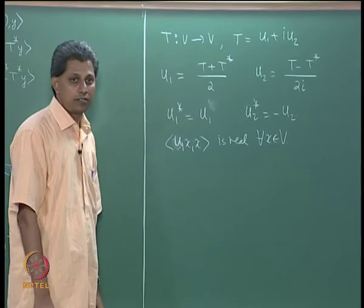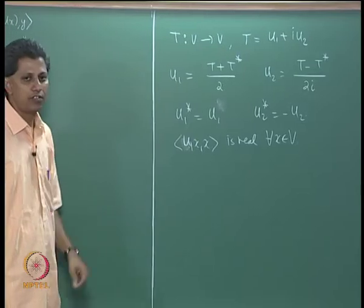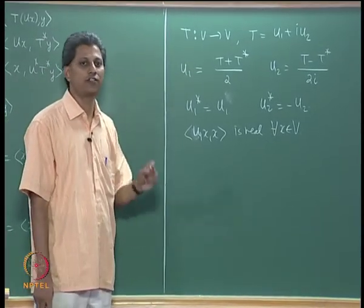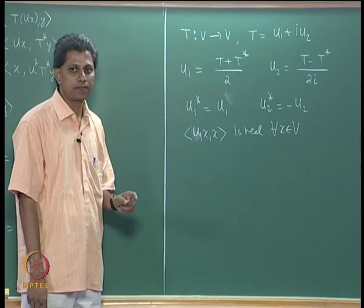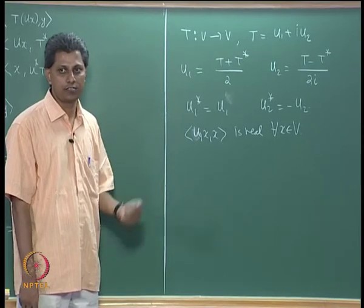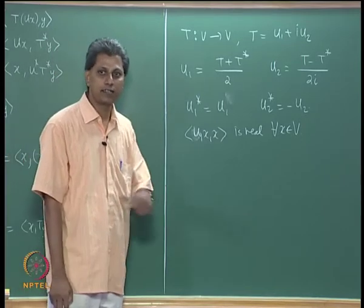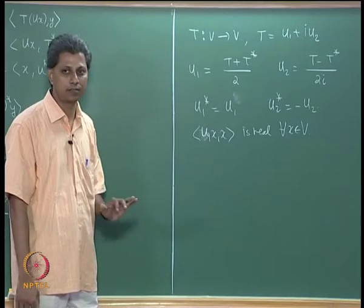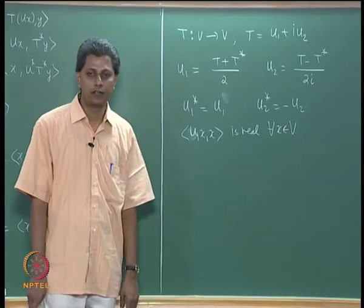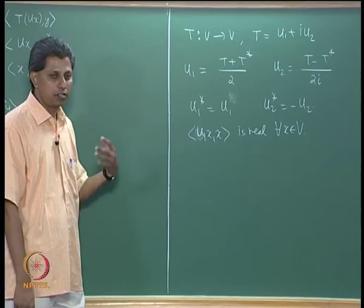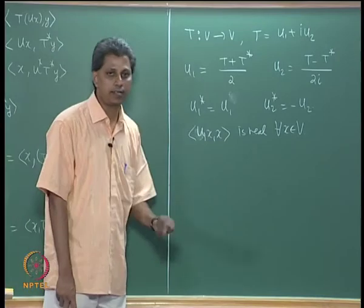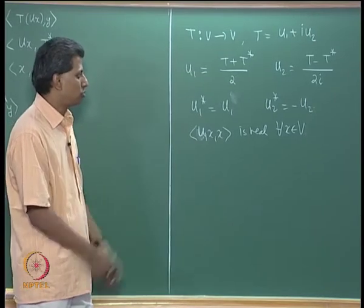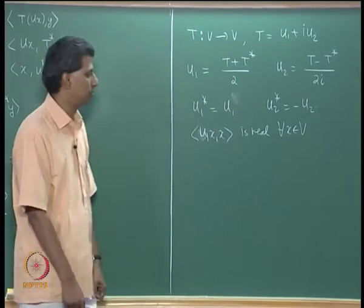Self-adjoint operators are important for one key reason: there exists an orthonormal basis of V each of whose vectors is an eigenvector for T. This is equivalent to saying T can be diagonalized by means of a unitary matrix. Any self-adjoint operator on a finite dimensional inner product space has an orthonormal basis of eigenvectors — another very important property that self-adjoint operators satisfy.